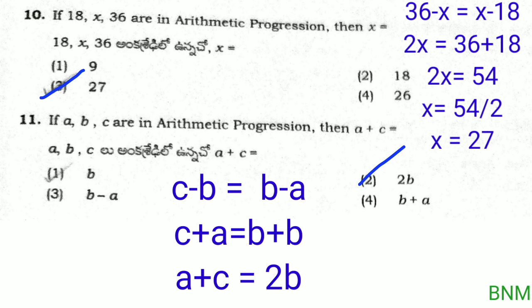Next: if a, b, c are in arithmetic progression, then a plus c is equal to 2b.